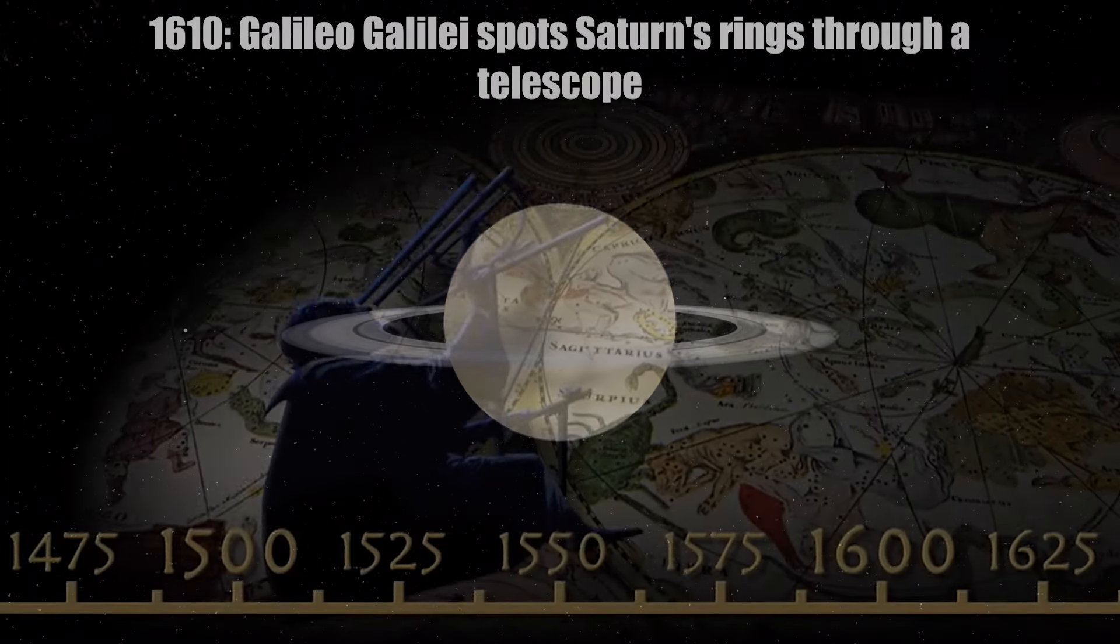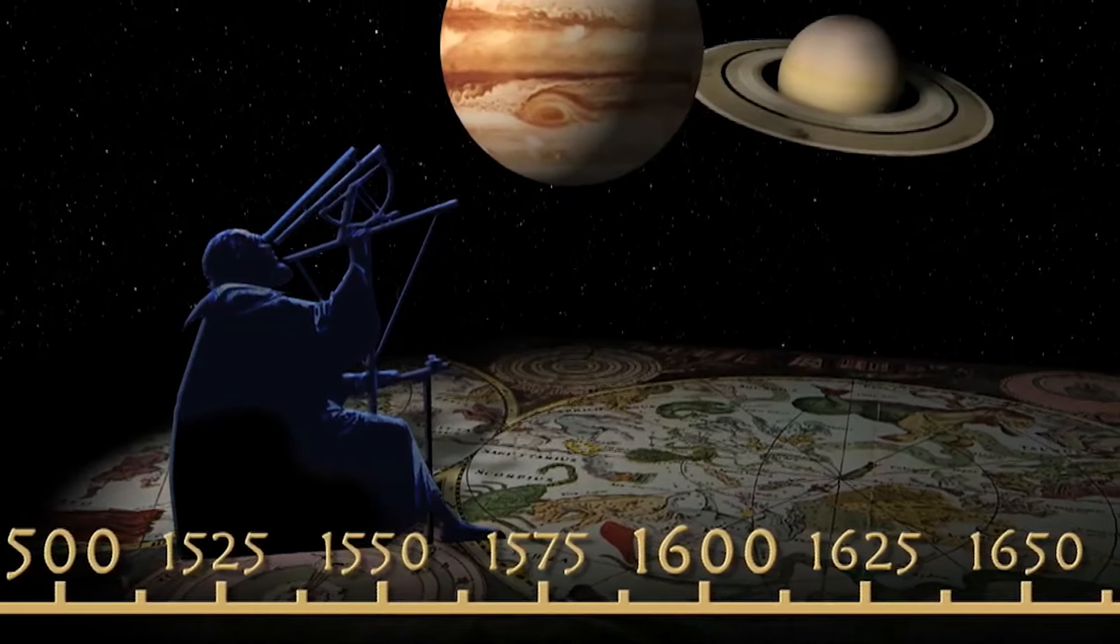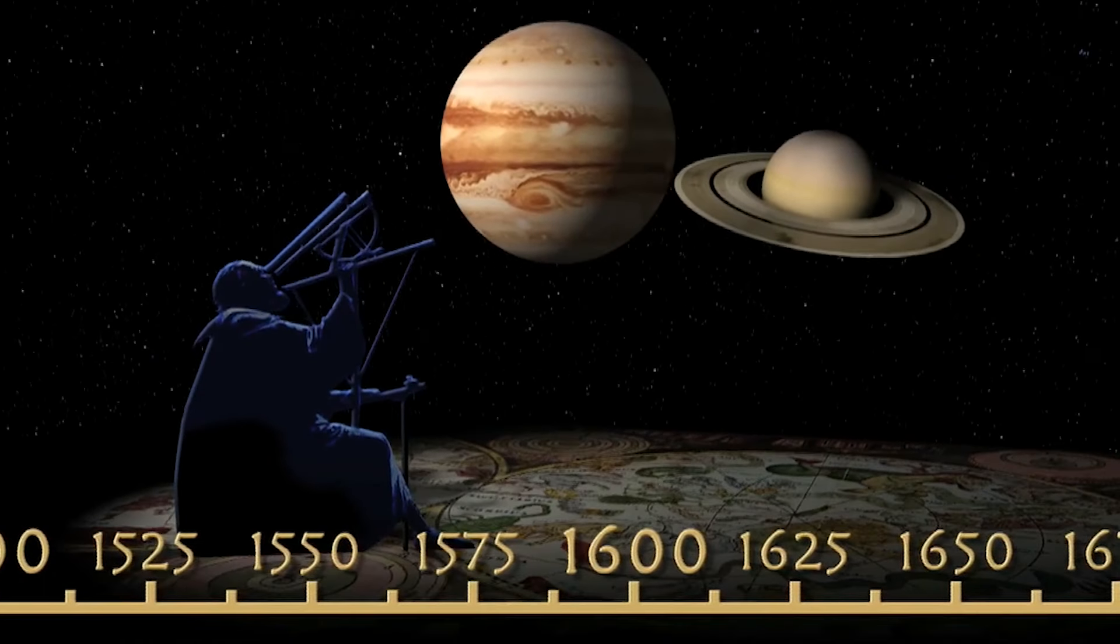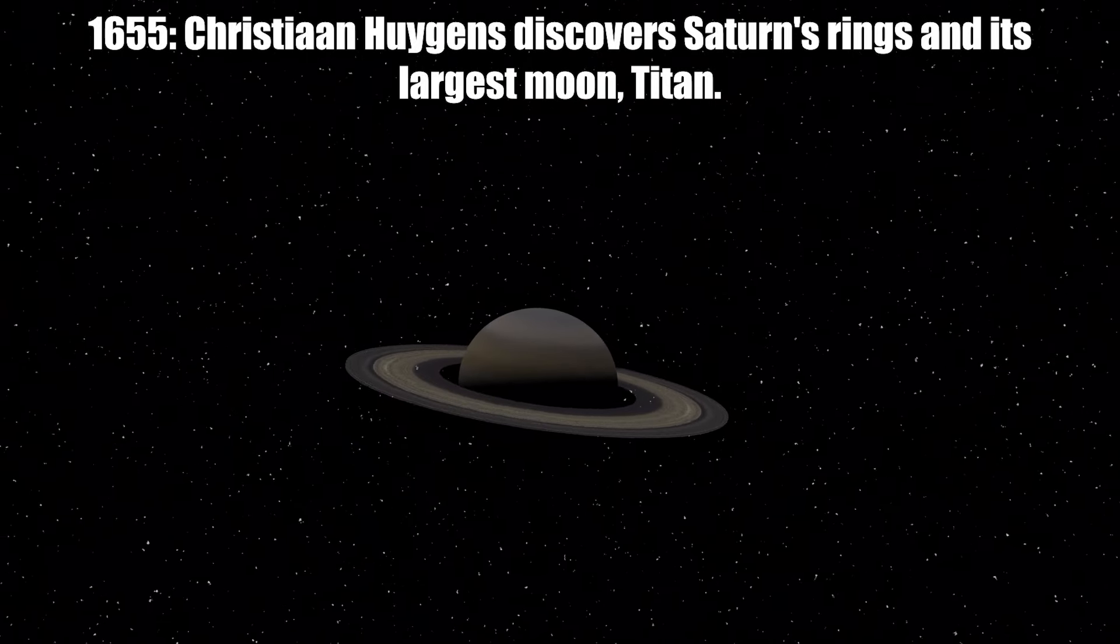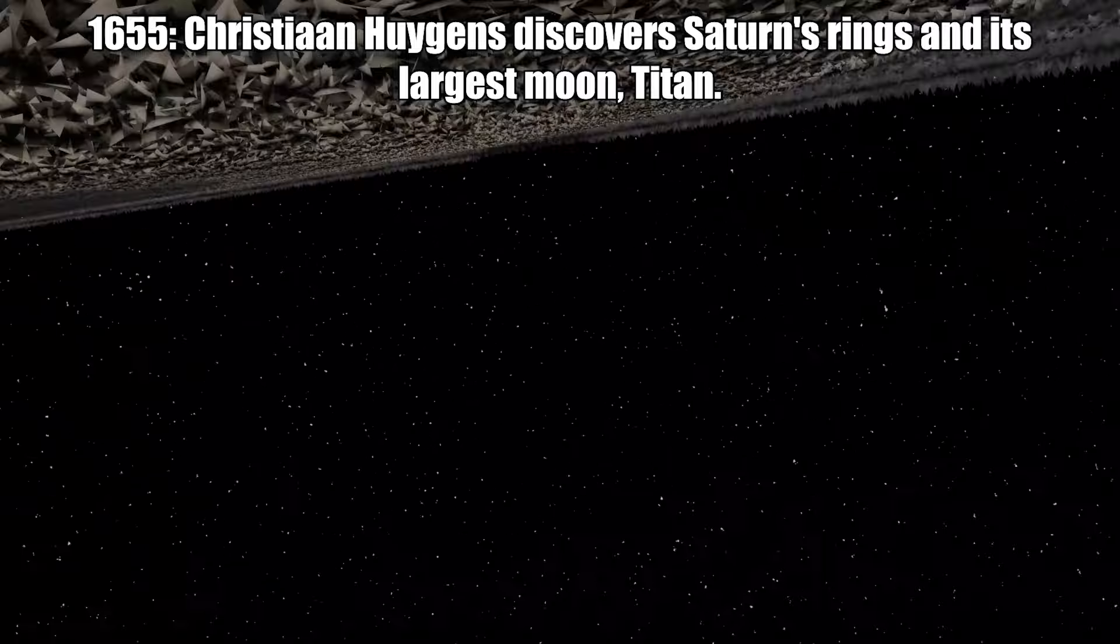1610, Galileo Galilei spots Saturn's rings through a telescope but mistakes them for a triple planet. In 1655, Christian Huygens discovers Saturn's rings and its largest moon Titan.